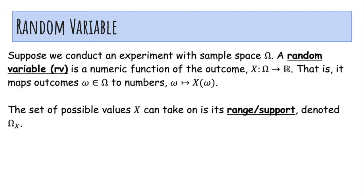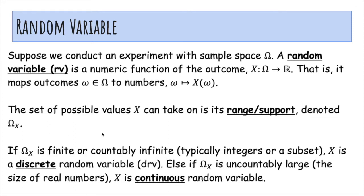The set of possible values X can take on is called its range or support, and it's denoted omega sub capital X. And if omega X is finite or countably infinite, usually a subset of integers or all of them, X is a discrete random variable.